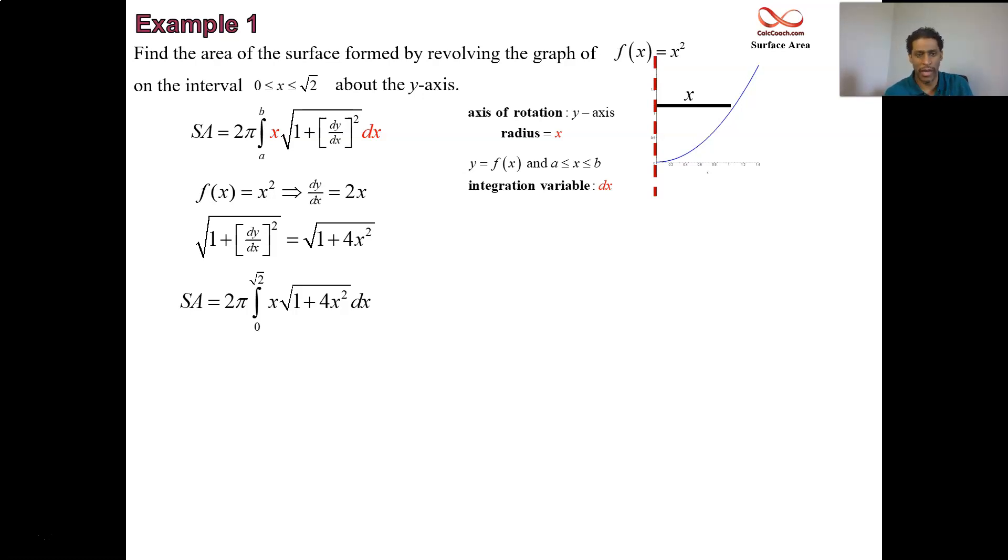So let u be the inside, 1 plus 4x squared, du 8x dx. You need to replace x dx, so replace it with 1 eighth of du. You still have the 2 pi out there. You have the square root of u, or u to the half, and then we have the 1 eighth that's going to be pulled out in the du.